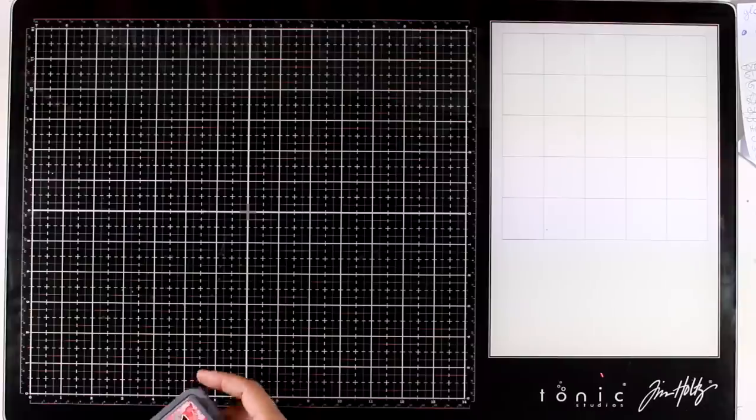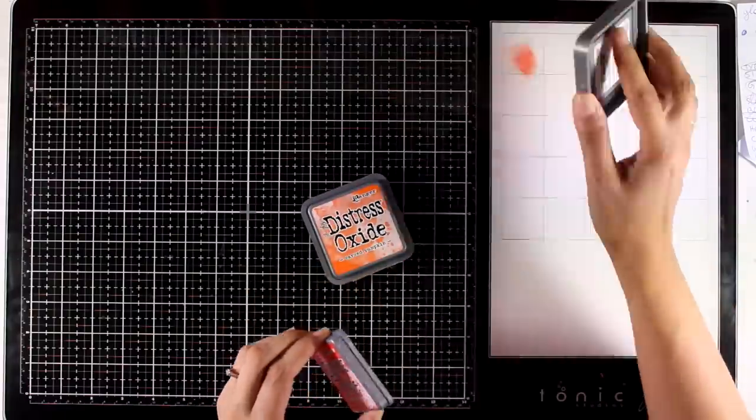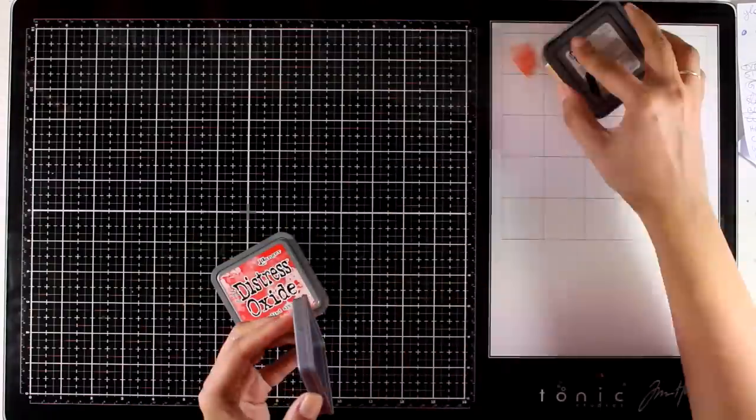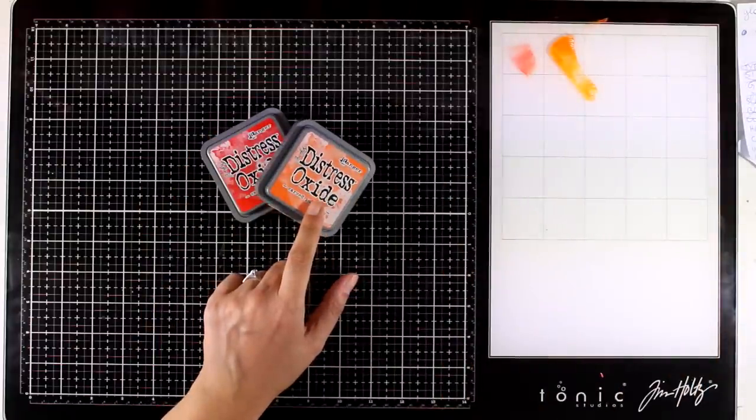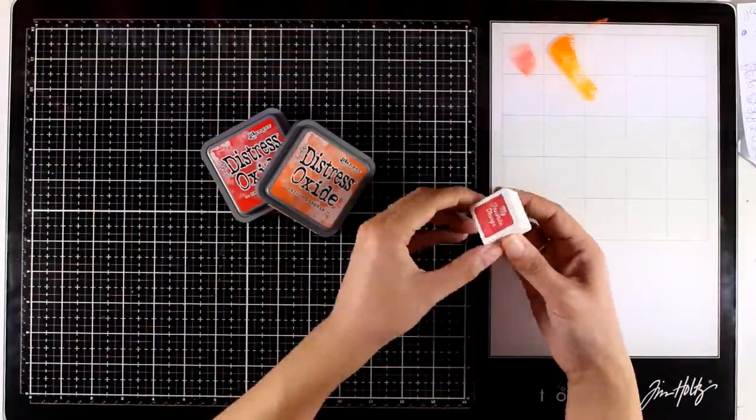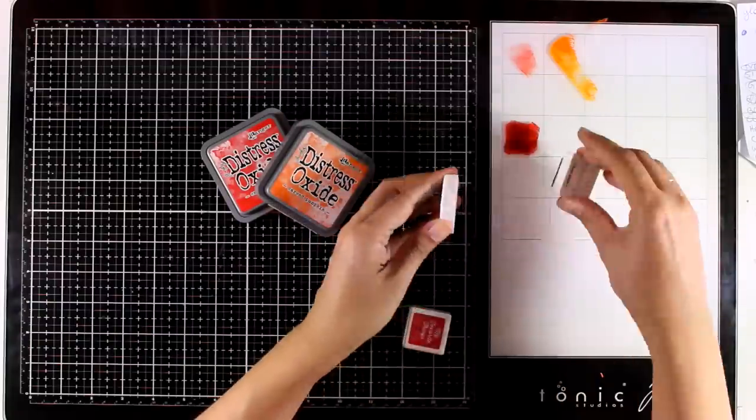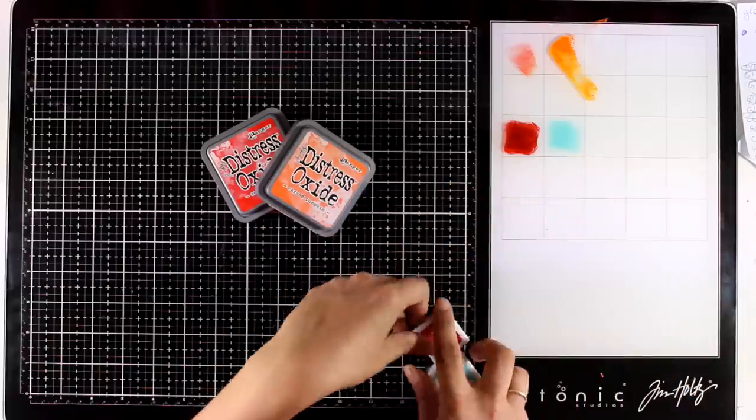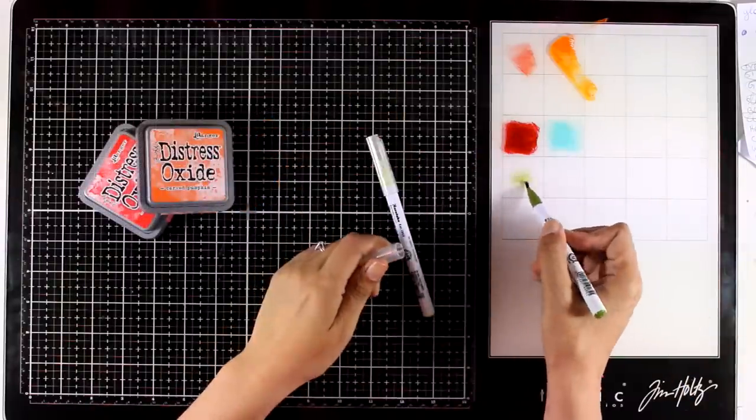Since everything is black in this glass mat, it's nice to have a white area to use as a palette where you can see the true color. All I'm doing here is apply a little bit of this ink, and I'm using distress oxides here. You can see the real color, you can pick it up with water and a water brush. You can use pretty much any type of medium to create your palettes.